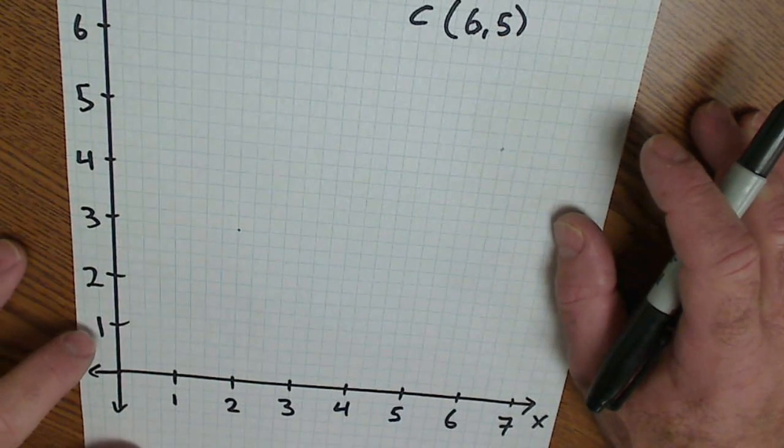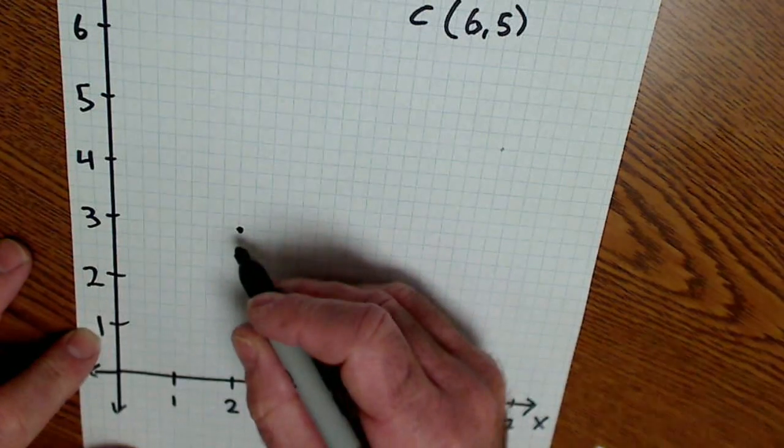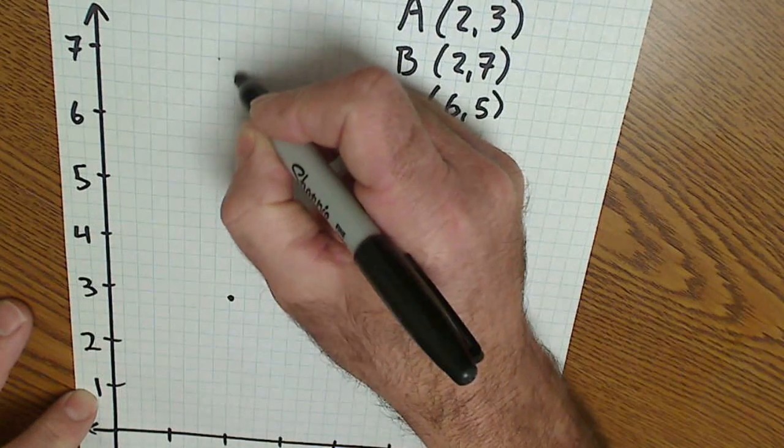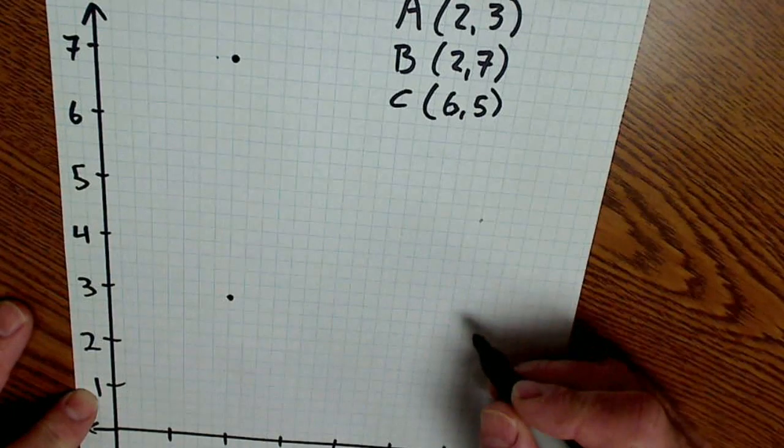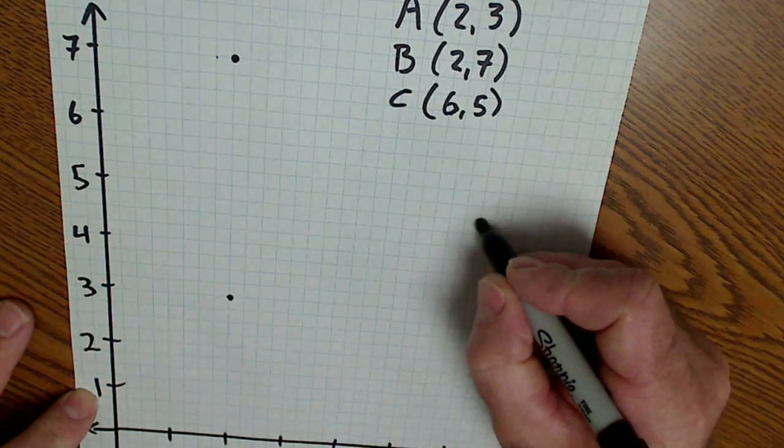The first coordinate, 2, 3, this is an ordered pair, over 2, up 3. Next coordinate, 2, 7, over 2, up 7. And then the third coordinate, point C, over 6, up 5.